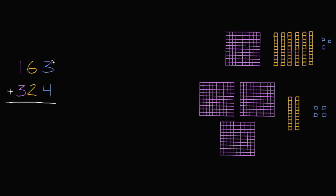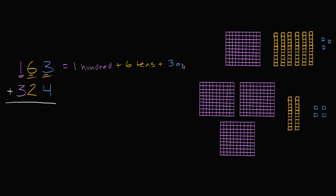So I have the number 163, and that is the same as: I have a one in the hundreds place, so that's 100, plus six tens, plus three ones. I have a three in the ones place, plus three ones — let me do that in the color blue, which I have for the ones place.